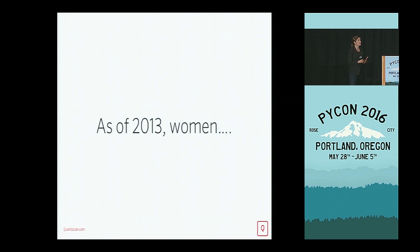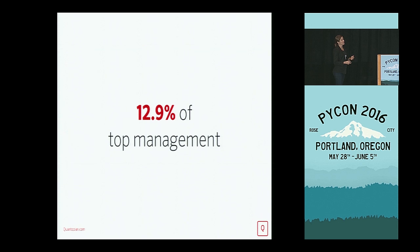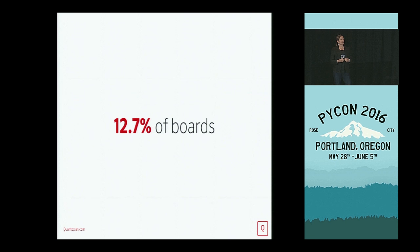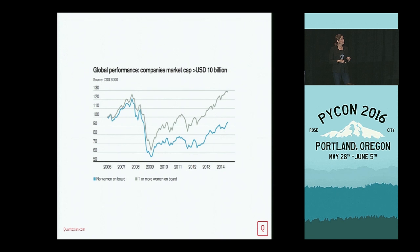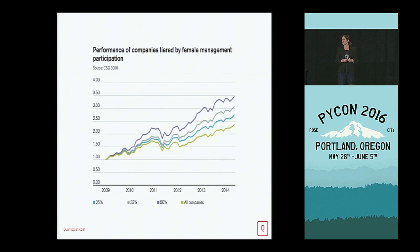This was in late 2013, and the Gender 3000 report took a look at 3,000 companies across 40 countries and looked at how gender was reflected in those organizations. As of 2013, women were 12.9% of top management and on 12.7% of boards. The charts I liked showed global performance: the gray line is companies with one or more women on their board, and the blue line is companies with no women on their board. Performance tiered by percentage of the management team that's female: the purple line at top is 50% women, gray is 33%, blue is 25%, and yellow is all companies.